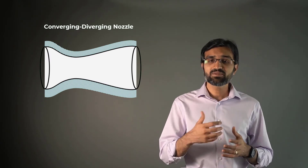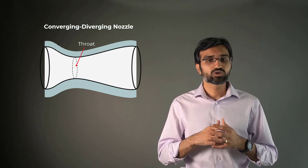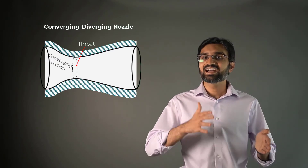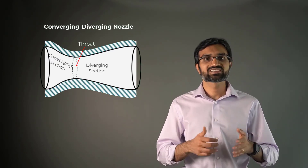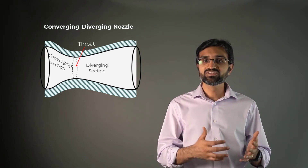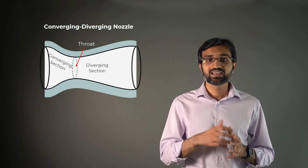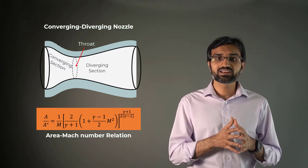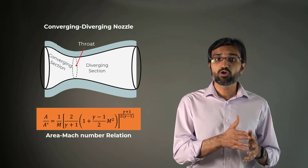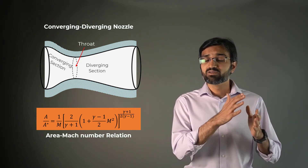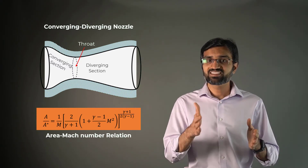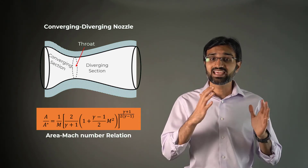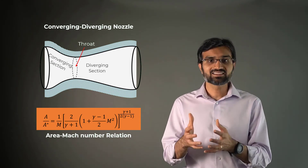There is a minimum area section called the throat, which is preceded by the converging section and succeeded by the diverging section. Using continuity and isentropic relations, we can obtain the following relation for the variation of Mach number with nozzle cross-sectional area. This equation is called the area-Mach number relation.